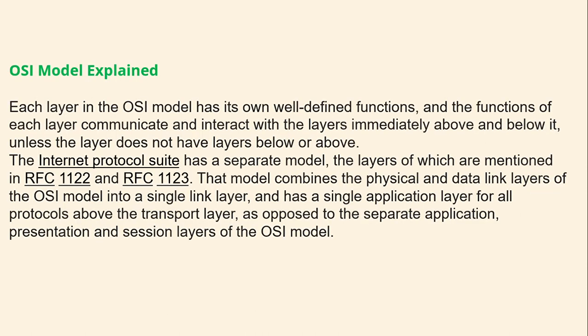In the OSI model, each layer has its own well-defined functions and communicates with the layer immediately above and below it, unless no such layer exists. The Internet Protocol suite has its own separate model, referenced in RFC 1122 and RFC 1123. It combines the physical and data link layers of the OSI model into a single link layer, and has a single application layer for all protocols above the transport layer, as opposed to the separate application, presentation, and session layers of the OSI model.